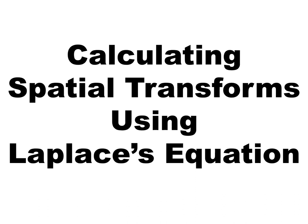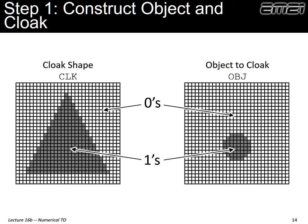Now let's think about how to do a spatial transform using what we've learned about Laplace's equation. The first thing we need to do is construct our object and cloak. We're not using closed form equations, so we need to draw pictures. The shape of the cloak is CLK and the object is OBJ. The object is inside the cloak — inside the cloak we'll calculate the permeability and permittivity values so that a wave passing through bends around the object and never enters it, rendering it invisible. We draw pictures with zeros for empty space and ones where the cloak or object is.